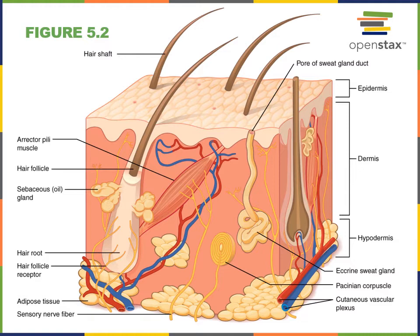Another way the epidermis is protective is that it contains a brown pigment called melanin that absorbs ultraviolet radiation to protect from the damaging effects of the sun, to prevent sunburn, and to reduce the risk of skin cancer that can result from ultraviolet radiation damaging DNA.